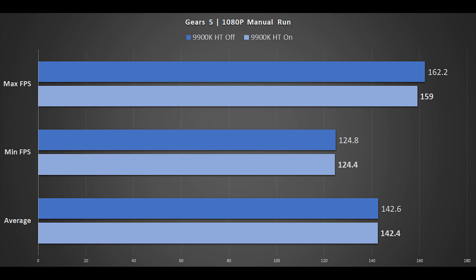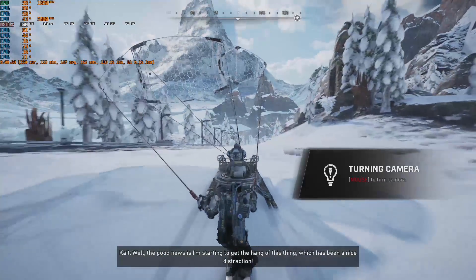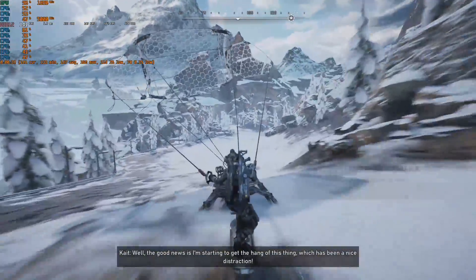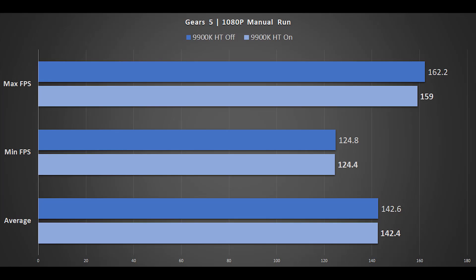Here we have another Gears 5 benchmark, this time a manual run-through at 1080p. The results here pretty much mirror what the game achieved with the built-in benchmark. We also have Blair Witch — another manual benchmark with all settings maxed out at 1080p. Here, hyperthreading enabled and disabled scored identically, but minimum performance and maximum performance with hyperthreading enabled are slightly higher.